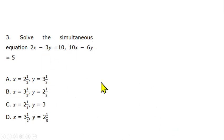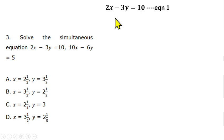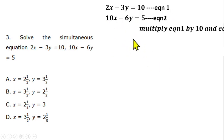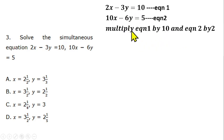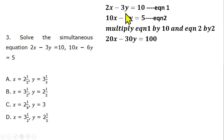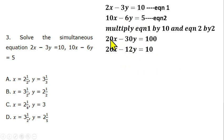Question 3 is from simultaneous equations. Solve: 2x minus 3y = 10 (equation 1) and 10x minus 6y = 5 (equation 2). Using elimination, multiply equation 1 by 10 and equation 2 by 2 to make the x coefficients equal. This gives 20x minus 30y = 100 and 20x minus 12y = 10. Subtracting equation 2 from equation 1 eliminates x.